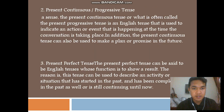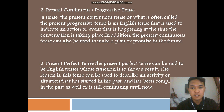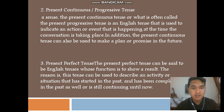Number two: present continuous or progressive tense. The present continuous tense, or what is often called the present progressive tense, is an English tense used to indicate an action or event that is happening at the time the conversation is taking place. It can also be used to make a plan or premise in the future.